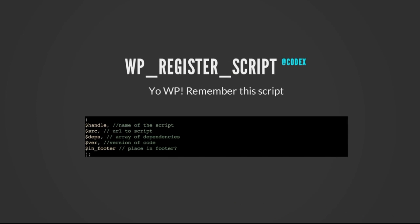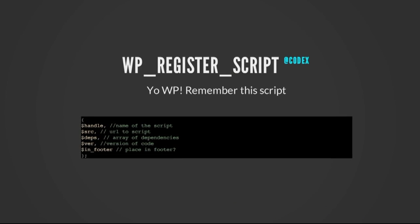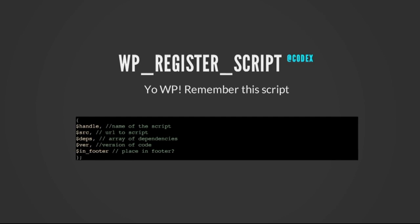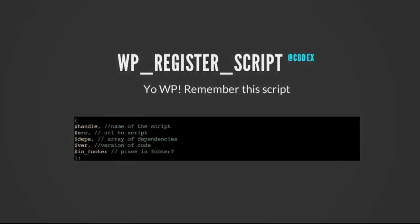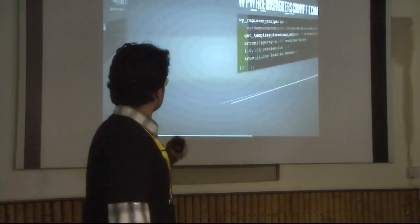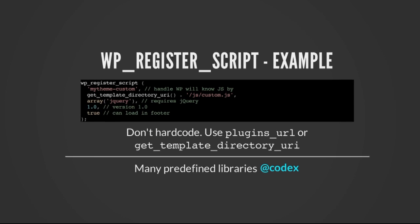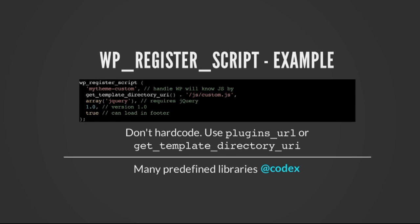It has five arguments. The first is the name or handle of the script — how I'm going to refer to it later. The second is the source or location of the script. Third is dependencies — does it require jQuery, does it require Mootools? Fourth is the version. And fifth is whether we should place it in the footer or the header. For example, I'm registering a script as `custom.js`, naming it `my-theme-custom`, it requires jQuery, it's version 1, and please load it in the footer.